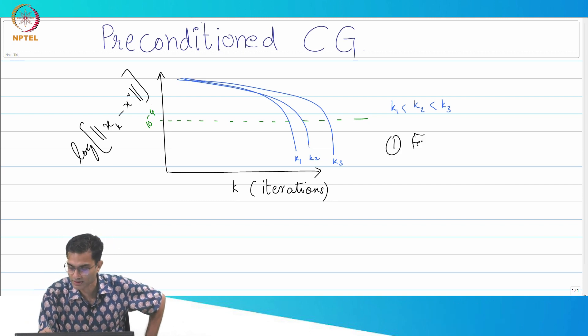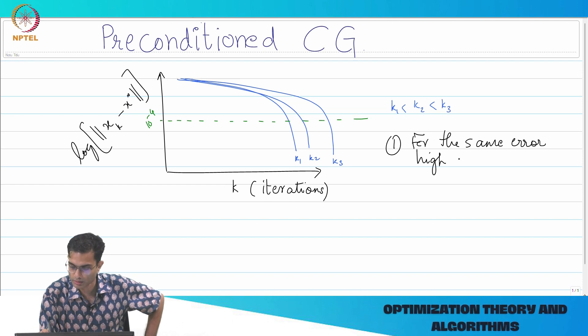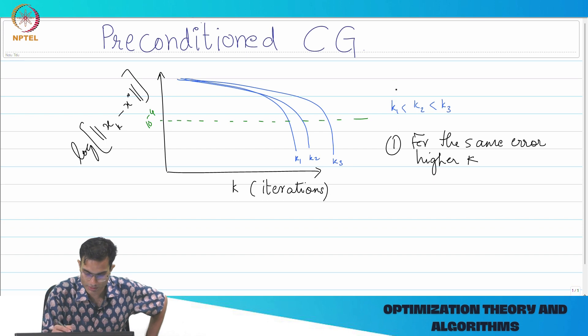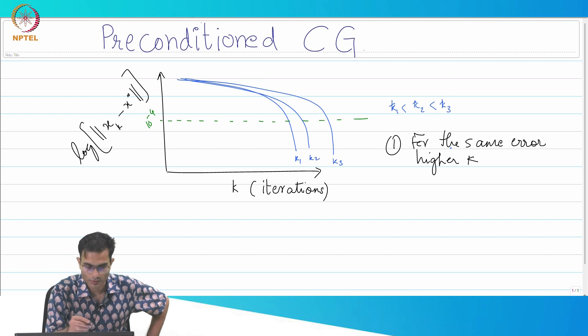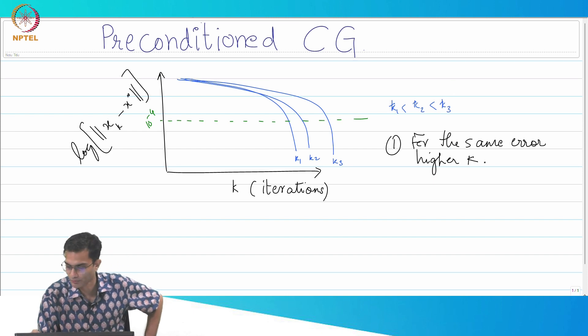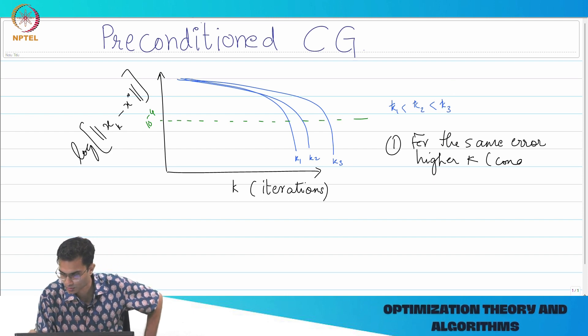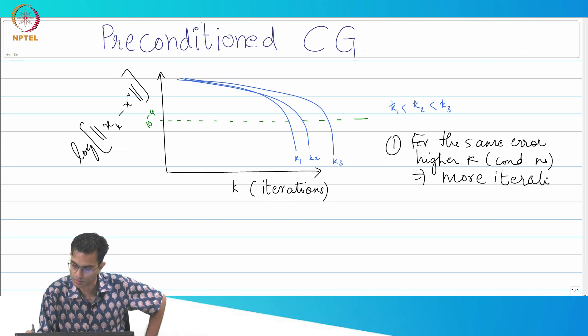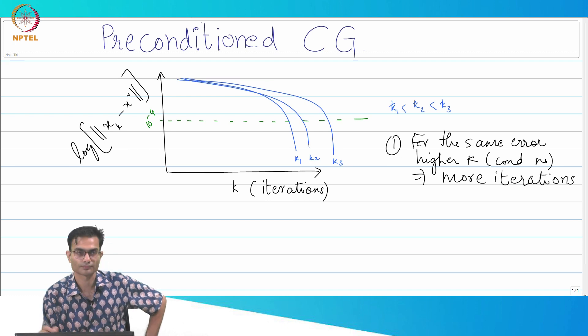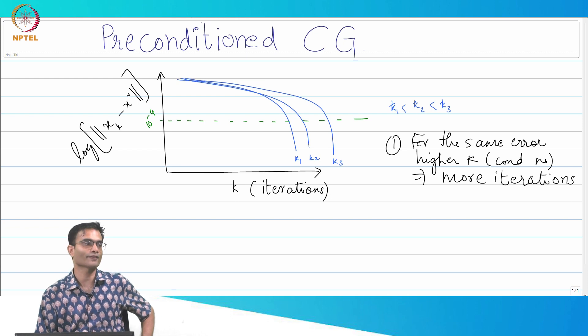What is our very obvious observation? To get the same error I need more iterations if the condition number is worse.